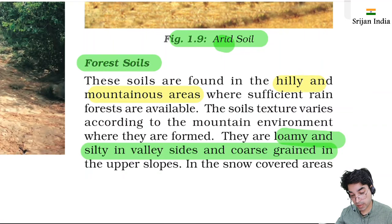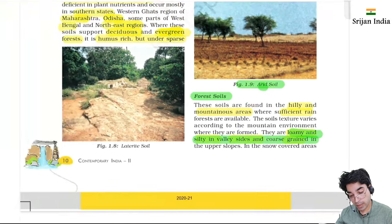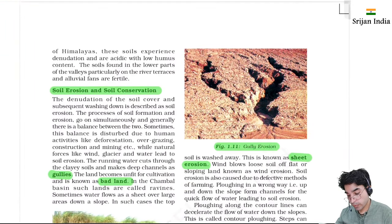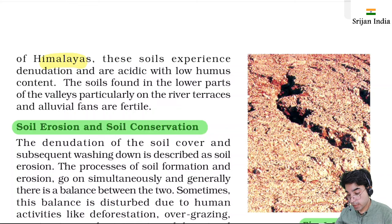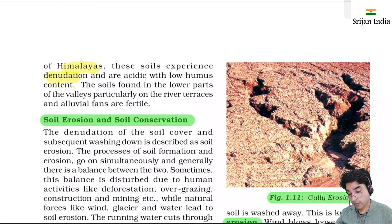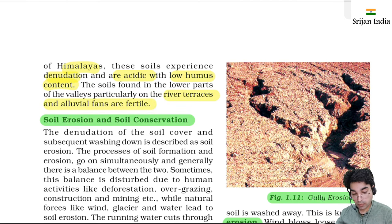Forest soil is found in hilly and mountainous areas with sufficient rain. Soil texture varies with mountain environment - loamy and silty in valley sides, coarse on upper slopes with snow cover in the Himalayas. Denudation is high due to terrain. Acidic and low humus content. Soils in lower parts of valleys near rivers form alluvial fans and are fertile.